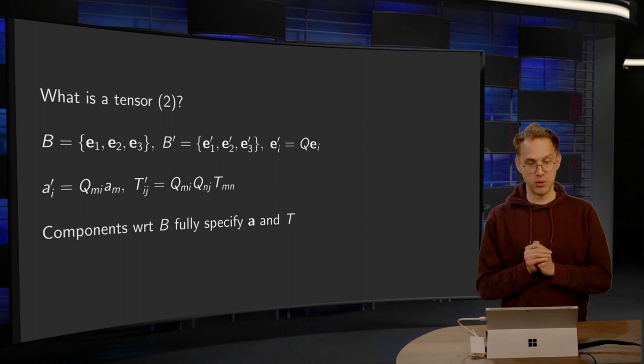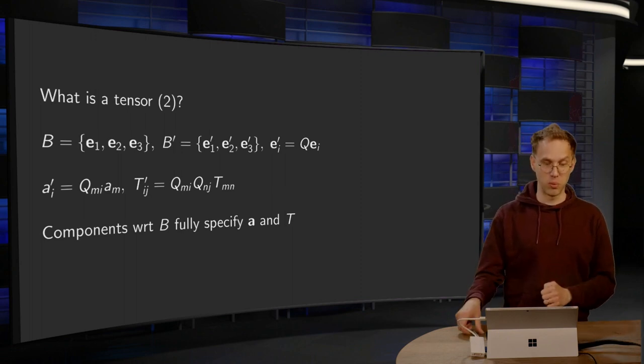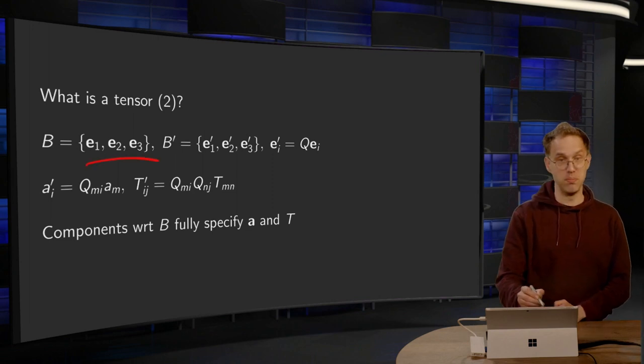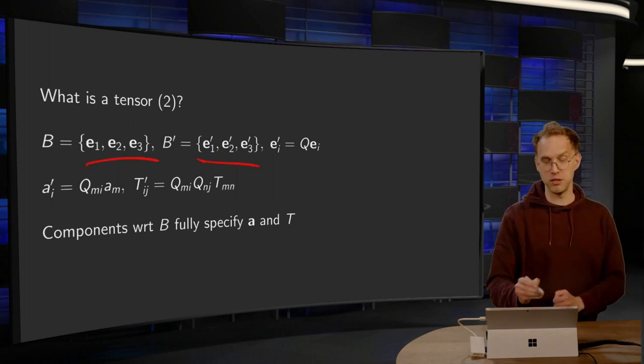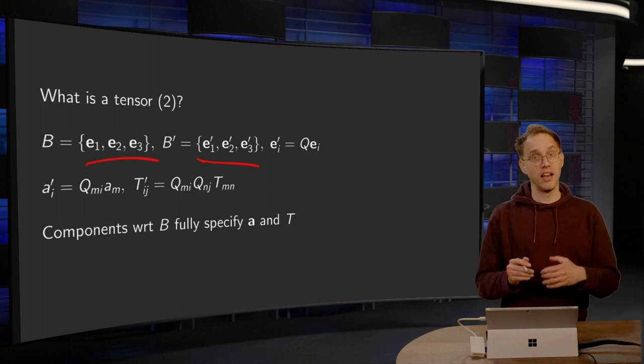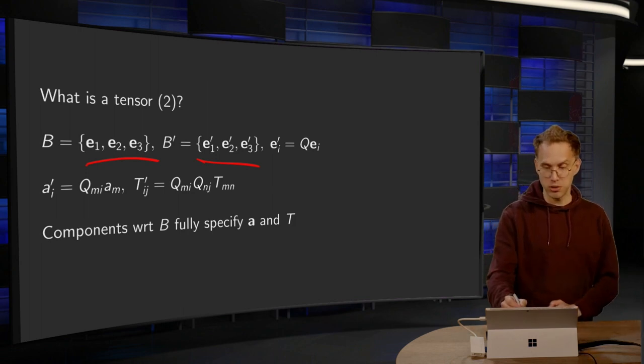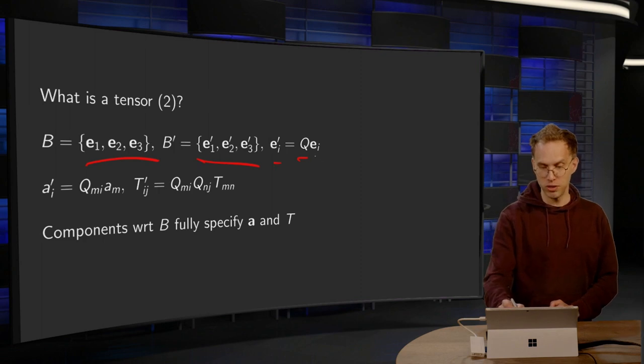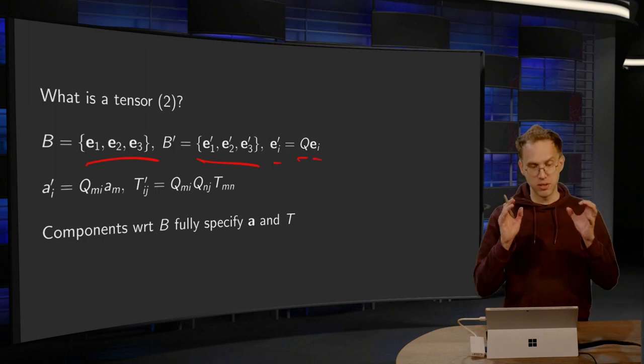So how are we going to achieve this? So what is a tensor? We have seen this. If you have one basis B and another basis B', then we can relate it by an orthogonal transformation Q, ei' equals Q times ei. So that's the setup.